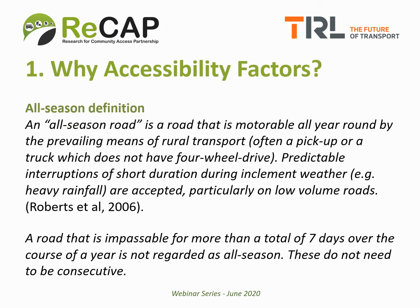So why do we need accessibility factors in the first place? The Roberts report from 2006 defines an all-season road as a road that is motorable all year round by the prevailing means of rural transport, which is often a pickup or a truck which does not have four-wheel drive. Predictable interruptions of short duration during inclement weather, such as heavy rainfall, are accepted particularly on low volume roads. In the supplemental guidelines in 2019, we clarified that a road that is impassable for more than a total of seven days over the course of a year is not regarded as all-season.